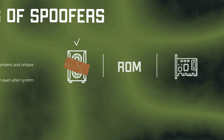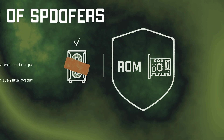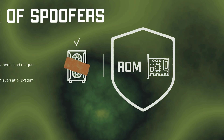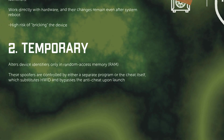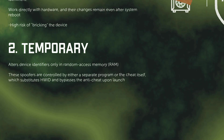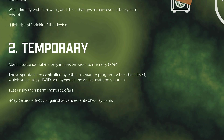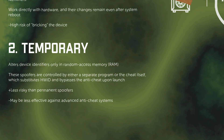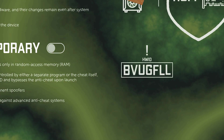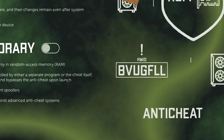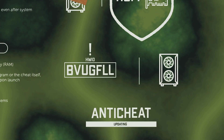Additionally, some serial numbers are stored on separate, modification-protected chips, making them difficult to alter, and not all hardware identifiers can be changed, so even permanent spoofers may be unable to replace all data. The second type, temporary spoofers, alters device identifiers only in RAM. These spoofers are controlled by either a separate program or the cheat itself, which substitutes HWID and bypasses the anti-cheat upon launch. Although less risky than permanent spoofers, they face serious issues: they are only active while the cheat is running, and if the anti-cheat system updates, such a spoofer can quickly become useless and the player will be instantly banned.